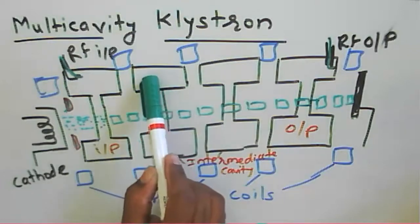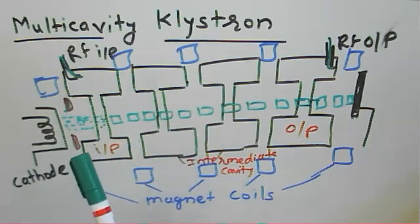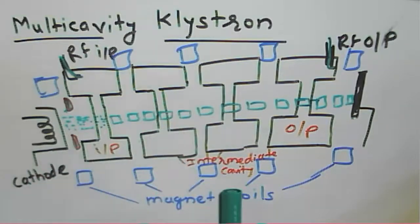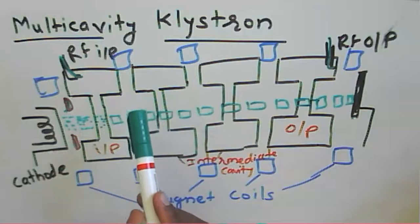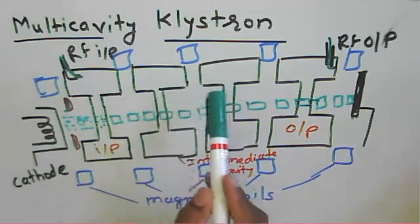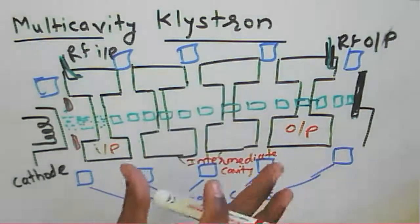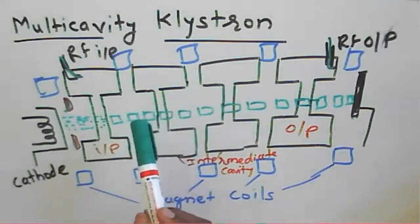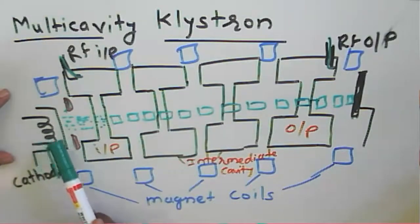The additional cavities — cavity one, cavity two — are called intermediate cavities. The explanation for the multi-cavity klystron follows the same principle: velocity modulation and then current modulation, just as in the two-cavity klystron. The key difference is that it has multiple intermediate cavities — three, four, five, or six cavities can be considered.